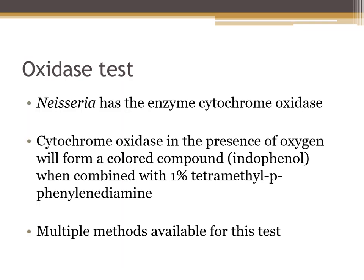If you're not sure whether you're dealing with Staphylococcus or a Neisseria, you can do the oxidase test. Neisseria has the enzyme cytochrome oxidase, which in the presence of oxygen forms a colored compound called indophenol — basically a purple color compound — especially when combined with 1% tetramethyl-p-phenylenediamine. This is similar to the Microdase test, but the Microdase test uses a 6% solution whereas the oxidase test uses a 1% solution. Neisseria is always positive for the oxidase test.